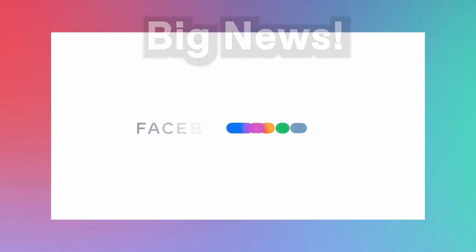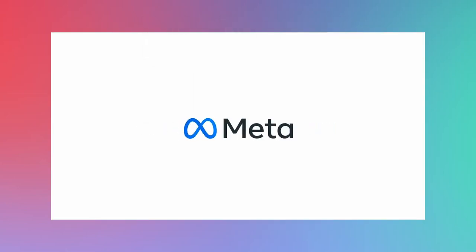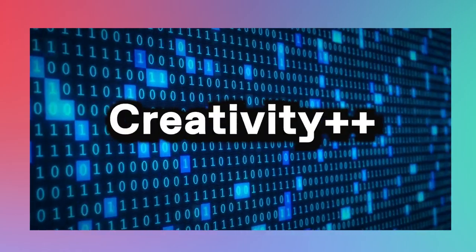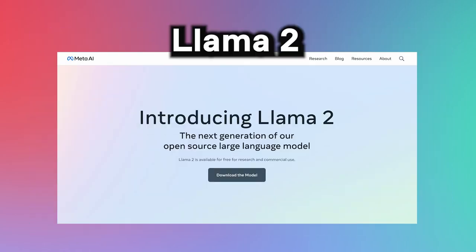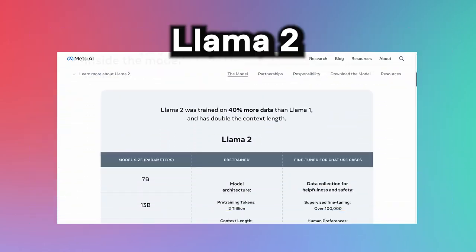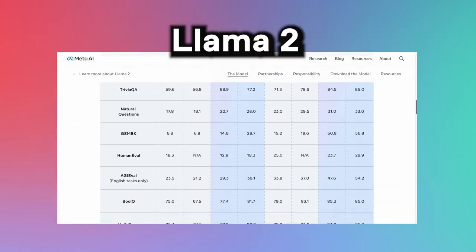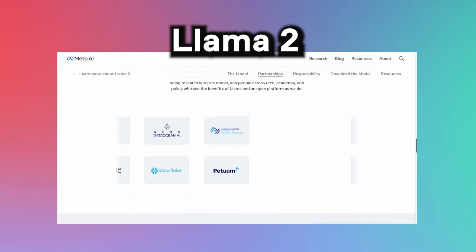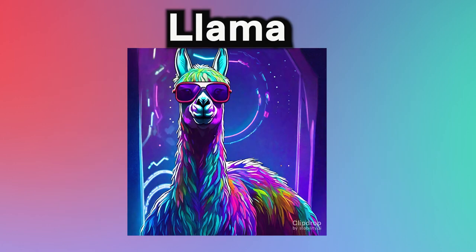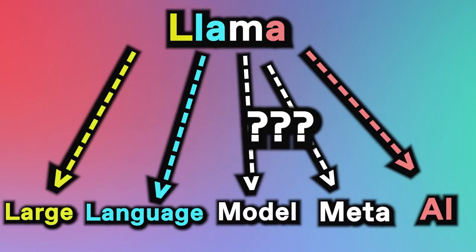Big news! Meta just released a new large language model that could potentially rival OpenAI's GPT models in performance, efficiency, and even creativity. This is Llama 2, the open source successor to Meta's earlier large language model, Llama. Llama stands for Large Language Model Meta AI and is free for research and commercial use.